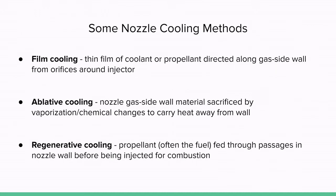Some of the main methods for cooling a rocket nozzle are film cooling, ablative cooling, and regenerative cooling. In film cooling, a film of coolant or propellant is directed along the gas side wall boundary layer to protect wall material from direct combustion products. The film is introduced into the chamber from around the injector.